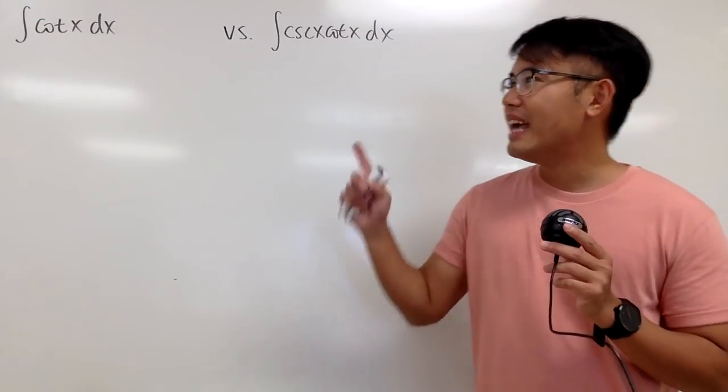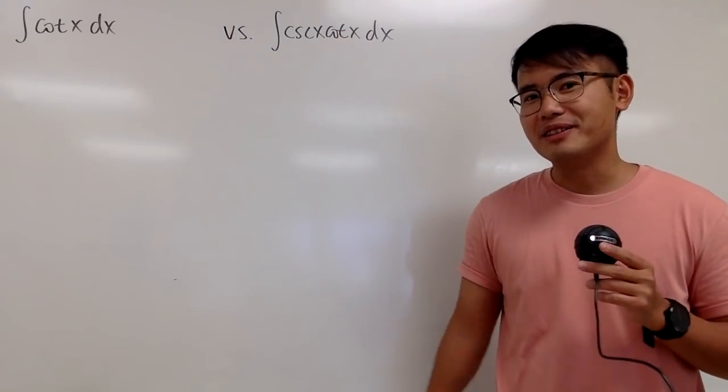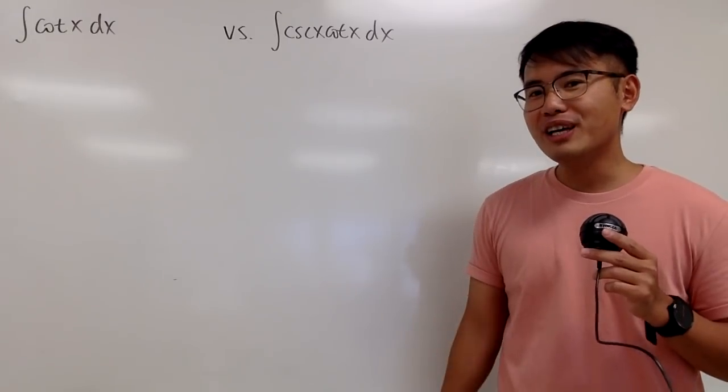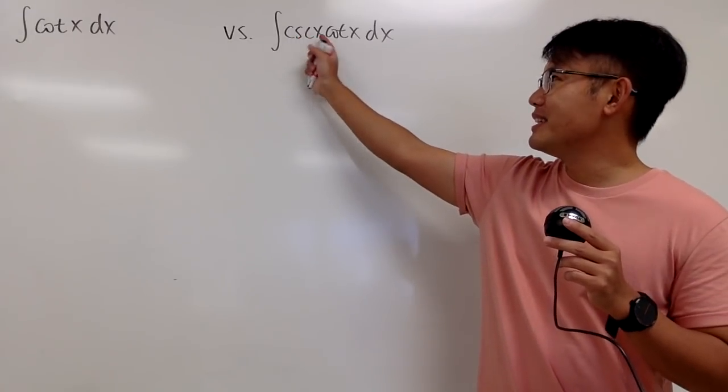Okay, we have two integrals on the spot, and which one do you guys think is easier? Both of them have the cotangent x, but this one has the cosecant x right here as well.